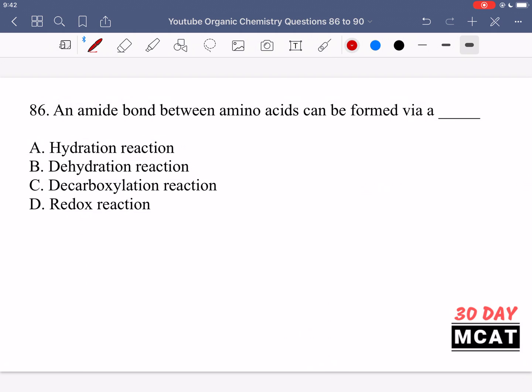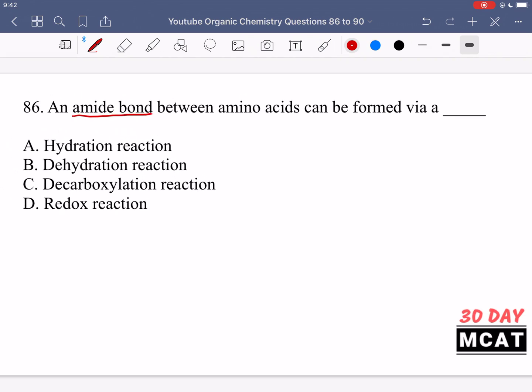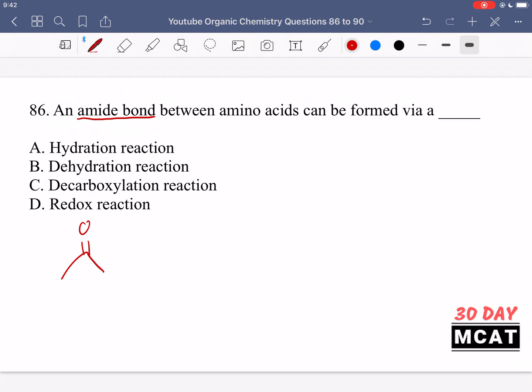Now let's go through the questions together. In question 86, an amide bond between amino acids can be formed via a blank. So an amide bond, what type of reaction is that? An amide bond is essentially a bond between the carboxyl group of one amino acid and the amine group of another amino acid. What happens is the amine is a nucleophile, it goes and attacks the carboxylic acid, we get breaking of the double bond and reforming of it, and then our leaving group is the OH group on the carboxylic acid.